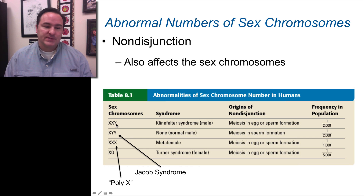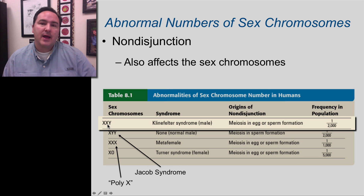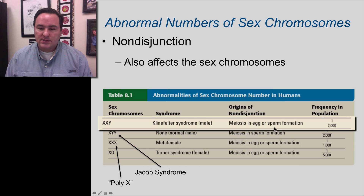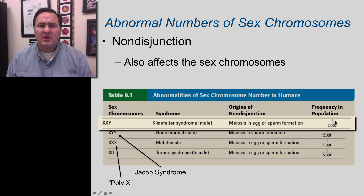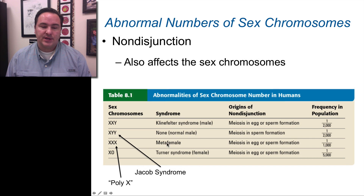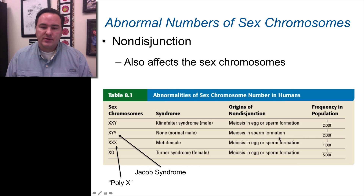So here are some examples. You can have an XXY — this is a male but has an extra X chromosome, and this has a name: it's called Klinefelter syndrome. So it's biologically a male, but there's an extra X there. You can also see that the origin of this is meiosis in egg or sperm formation, and it occurs in the population about 1 out of every 2,000. You can also have the XYY, also known as Jacobs syndrome, but for the most part this is a normal male — perhaps they produce a little bit more testosterone, so they have a few characteristics that are slightly different. Also occurs in about 1 out of every 2,000, and this is due to meiosis non-disjunction events in sperm formation.